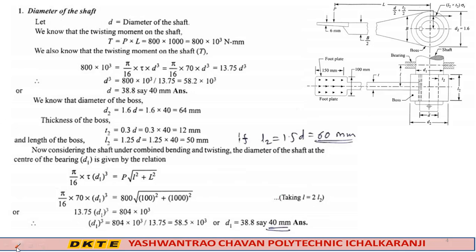First, diameter of the shaft. We know that the twisting moment on the shaft, capital T equals P times L. P is given 800 Newton, L is given 1000 mm, so this is 800 × 10³ Newton-mm. This is the twisting moment.